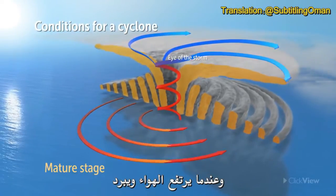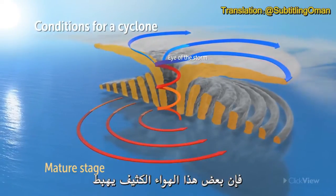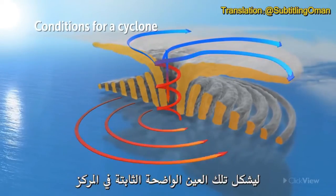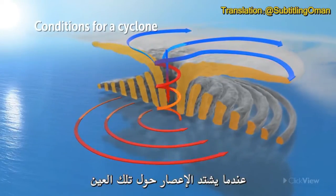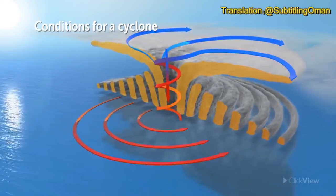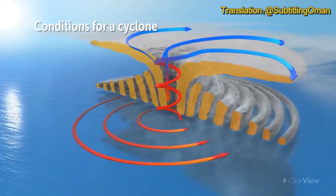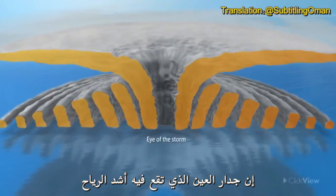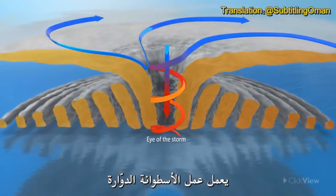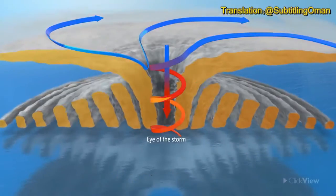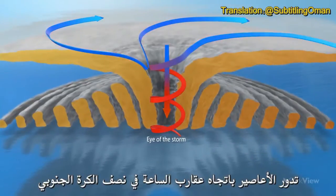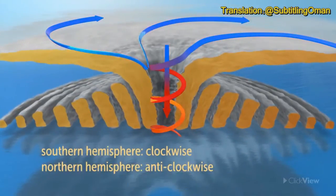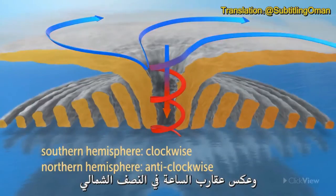It is at this stage that the cyclone matures and the eye of the storm is created. As the air rises and cools, some of this dense air descends to form the clear, still eye as the cyclone rages around it. The eye wall, where the wind is strongest, behaves like a whirling cylinder. Cyclones rotate clockwise in the southern hemisphere, anticlockwise in the northern.